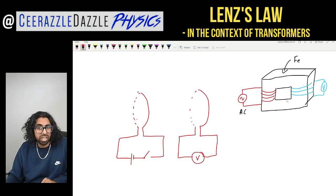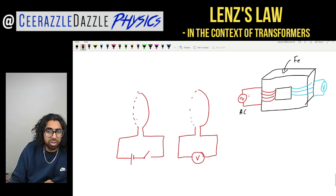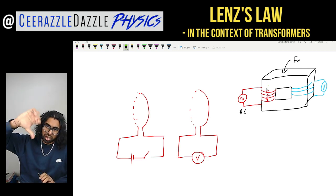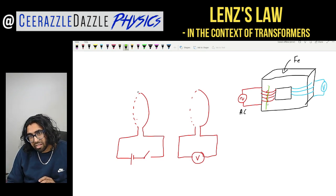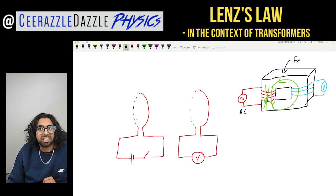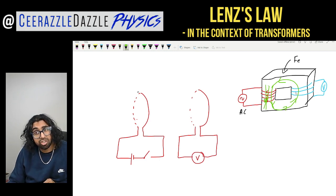Let's talk about how the transformer works. When current passes through the primary coil — say the current goes around this way — a magnetic field is induced. Using the right-hand rule, with current going this way, the field goes down, giving us a magnetic field in this direction. That magnetic field flows through the iron core and enters the secondary coil, which experiences a changing magnetic field, and therefore a voltage is induced.